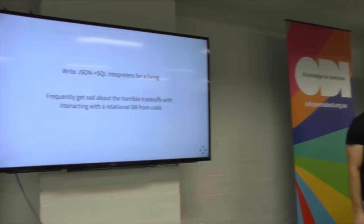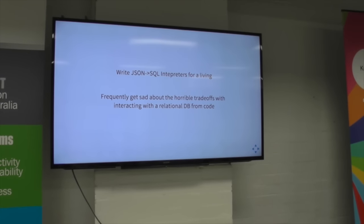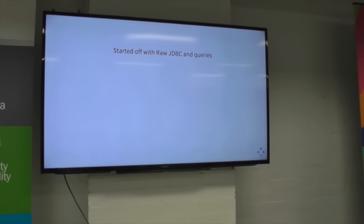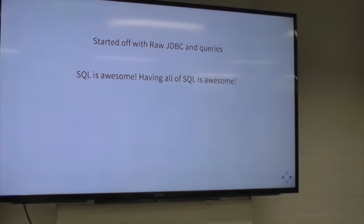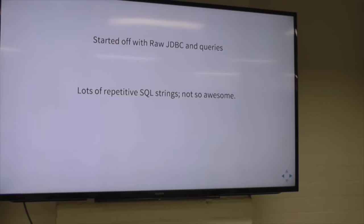My story is a fairly common one. I write JSON to SQL interpreters for a living. I'm fairly good at it. But I frequently get sad at the horrible trade-offs that we're forced to deal with when interacting with relational DBs in our code. I started off as a Java developer doing raw JDBC. It worked — you had all of SQL, which is pretty awesome. But you quickly repeat yourself a lot, and that's not so awesome.